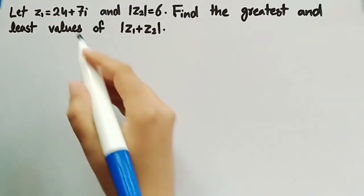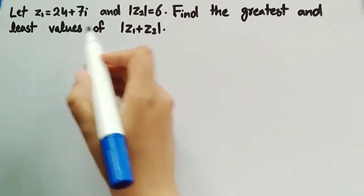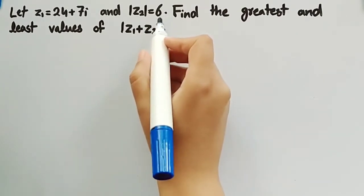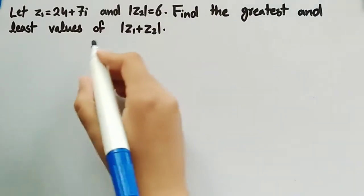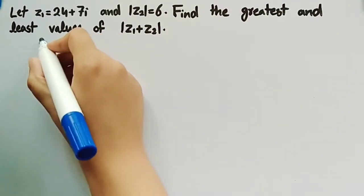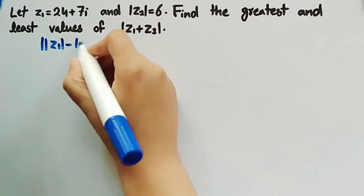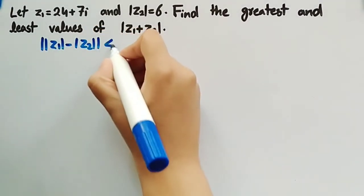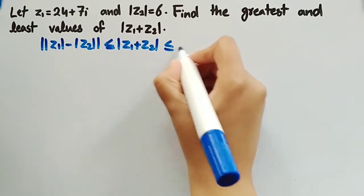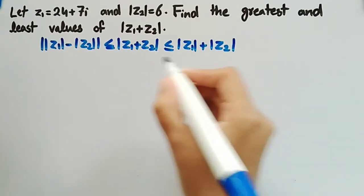In this example, a complex number z1 is equal to 24 plus 7 iota is given, and the absolute value of the other complex number z2 is equal to 6 is given. We have to find the greatest and least values of mod of z1 plus z2. In a previous video, we proved this inequality: mod of (mod z1 minus mod z2) is less than or equal to mod of z1 plus z2, which is less than or equal to mod of z1 plus mod of z2.